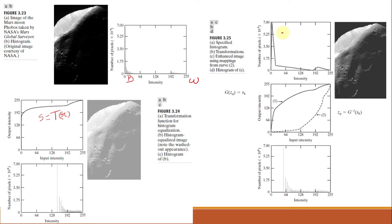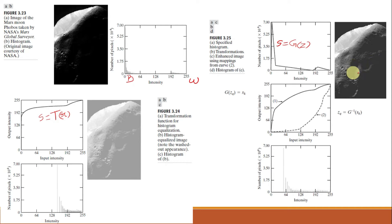Instead of using histogram equalization, if we specify the histogram to be applied to this image from the very beginning — this is our reference transfer function s = g(z) — and we equalize this reference transfer function, we obtain curve 1, represented by g(z_q) = s_k. Taking the inverse histogram values of curve 1 gives curve 2, specified by z_q = g⁻¹(s_k). Using this inverse mapping, the histogram we obtain gives an image where the darker portions are also visible properly, which is a much better image for analysis than the washed-out histogram-equalized version.